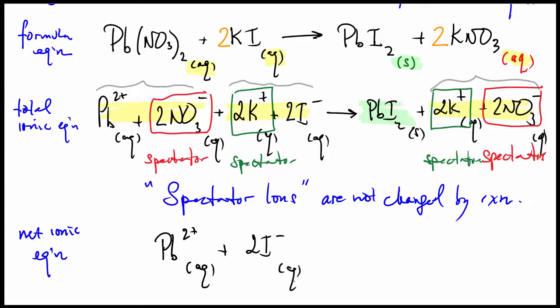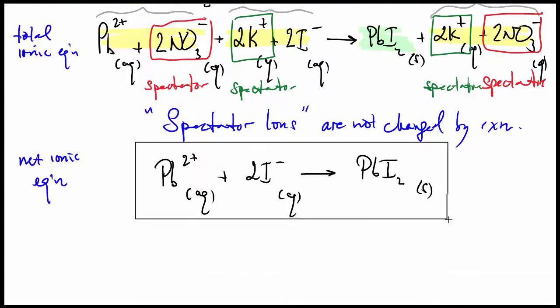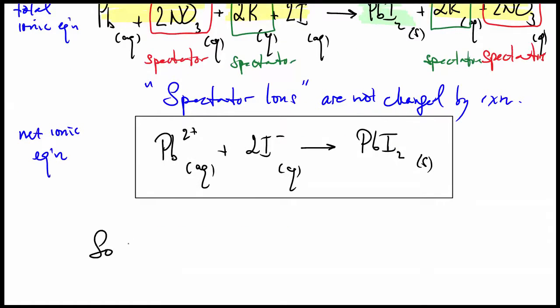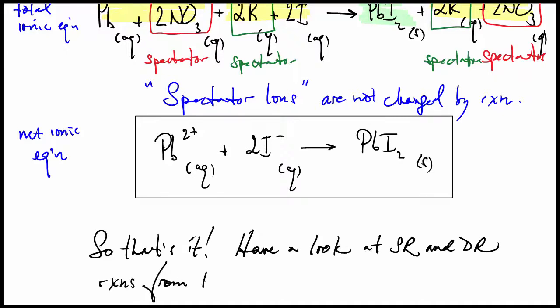The net ionic equation is that total one above, having removed the spectators. This reaction shows what actually happened. So the lead 2 ion and the 2 iodide ions, they snap together and form that lead 2 iodide precipitate. So that's the whole story.